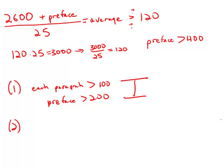Moving on to statement number two, leaving statement number one behind. Each paragraph of the preface has fewer than 150 words. Notice the correct grammatical use of the word fewer. So each paragraph is fewer than 150.